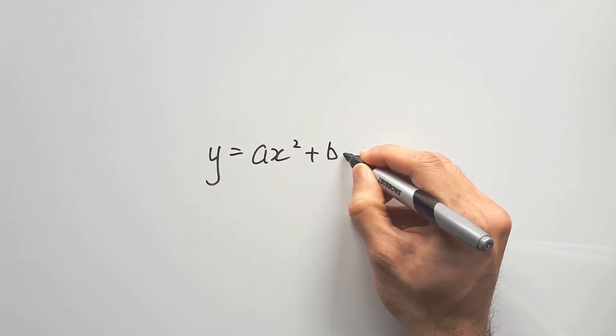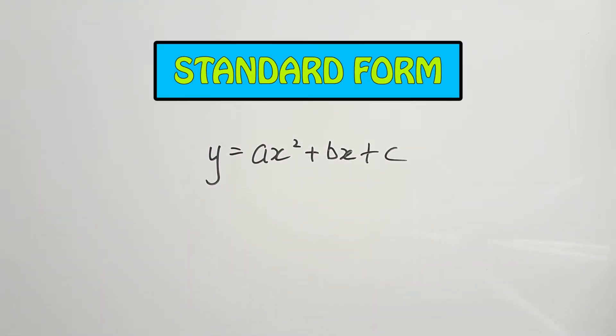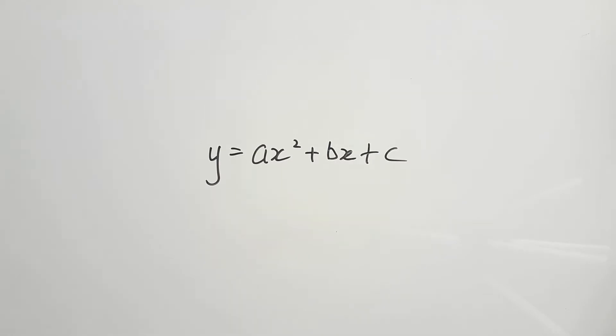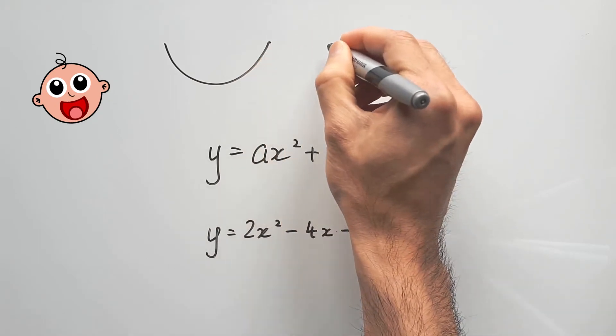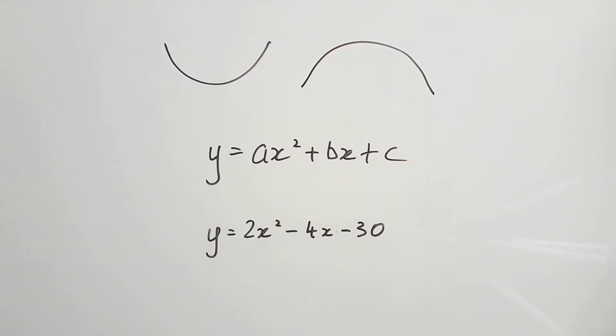y equals ax squared plus bx plus c. This is known as the standard form of a quadratic equation. Here is an example: y equals 2x squared minus 4x minus 30. The graph of this equation will either be a smiley face or a sad face. Both shapes are called a parabola.